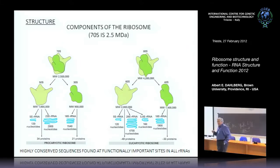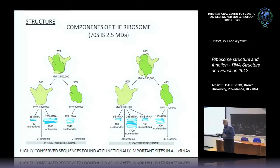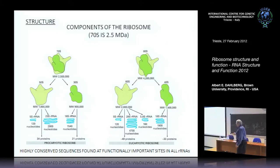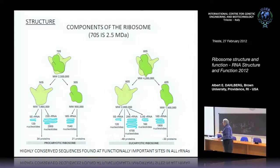Bacterial ribosomes and eukaryotic ribosomes actually look fairly similar to each other. The 60S is larger than the 50S, but they both have similar arms. The 30S subunits look much the same—both have a head and shoulders, and the messenger RNA goes around the head. The composition is pretty much the same. There's an extra RNA in the eukaryote: if you look at the sequence of the 5.8S RNA, it looks very much like the sequence of the 5' end of the 23S RNA—it's really a break in the 23S creating a new RNA.